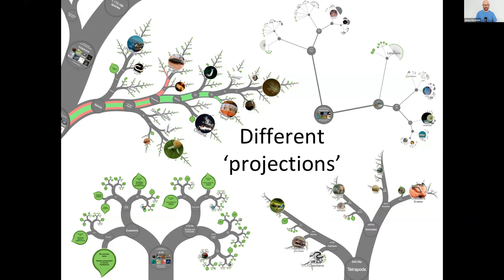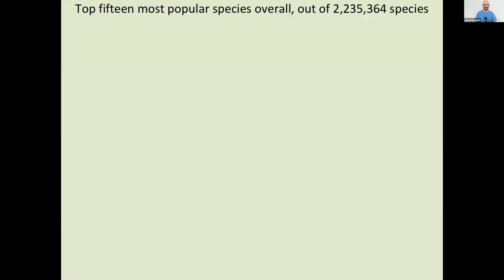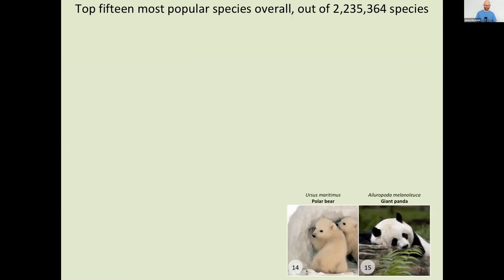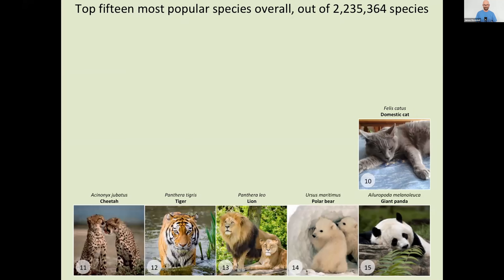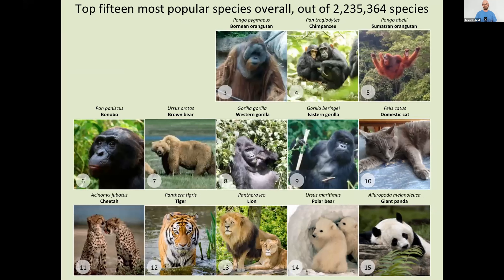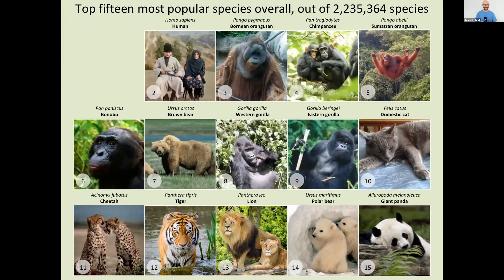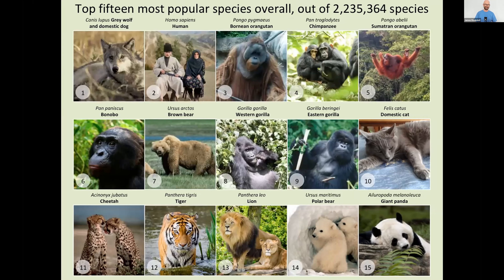One side benefit of this project is that we've developed an index of popularity, according to public opinion, of all the species of life, done using primarily Wikidata and the tree. So where are humans on our own index of popularity? Number 15 is the giant panda, then the polar bear, three species of big cats, the domestic cat, two species of gorilla, the brown bear, four other great apes — and then in second place, humans. And in first place, the grey wolf, which is of course the same species as the domestic dog. So we prefer them to ourselves. This popularity index probably needs a bit of work still.